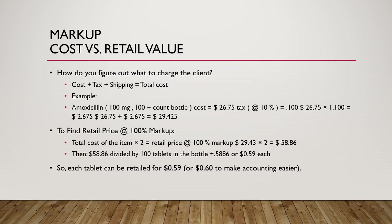How do we figure out how much to charge the client? The cost of keeping items on the shelf in a pharmacy is more expensive than in a shopping mall or grocery store, so we need to account for that. We take the cost of the item — our cost — plus tax, plus shipping, to get our total cost. Then we mark that up so there is some profit for the veterinary practice. This profit helps cover costs like employees, lights, labels, and bottles.